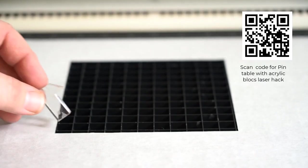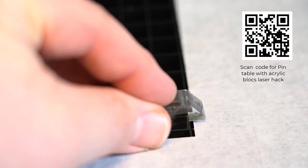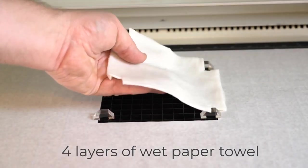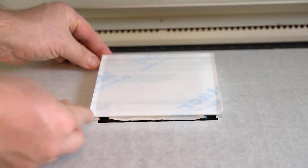Now I'm going to show you this again using acrylic blocks to both elevate the acrylic to reduce cutting table reflection points as well as to show you exactly how the wet paper towels work to reduce flare.